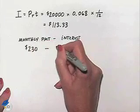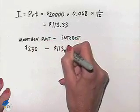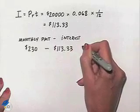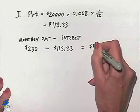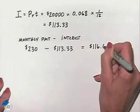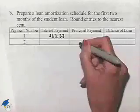And we're going to subtract from that the interest of $113.33 to give us a difference of $116.67. Let's take that amount and put it in the table.